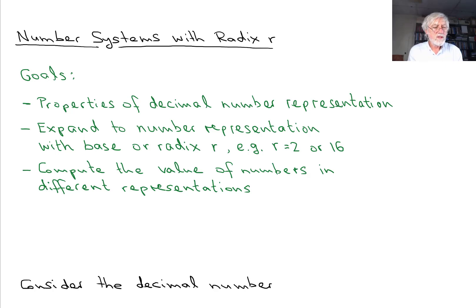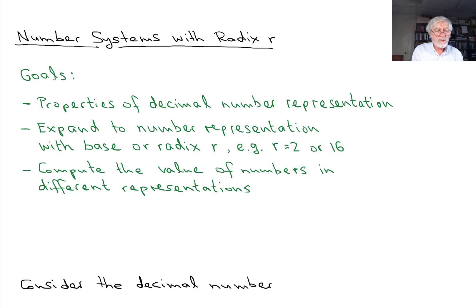In this video we are going to take a look at number systems with radix r representation. The goals are to look at the properties of decimal number representation, expand this to number representation with a base or radix r — more general than just decimal — for example r equal to 2 or r equal to 16. We also want to compute the value of numbers in different representations, for example binary numbers or hexadecimal numbers.